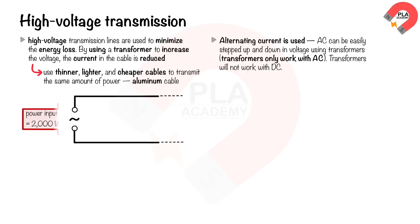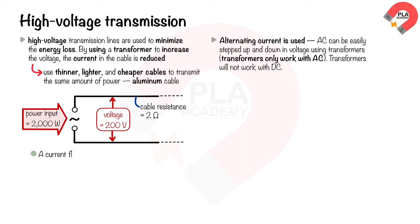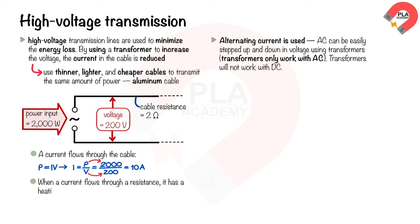In the first circuit, the power input is 2,000 watts, 200 volts, and the cable resistance is 2 ohms. The current flowing through the cable is calculated using Power equals current times voltage: substituting 2,000 watts and 200 volts gives a current of 10 amperes. When a current flows through a resistance it has a heating effect, so power is wasted. The power loss is calculated using Power equals current squared times resistance: substituting 10 amperes and 2 ohms gives a power loss of 200 watts.